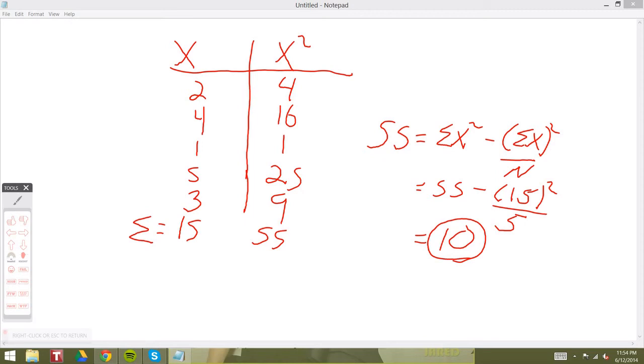It'd be much more tedious to go through the definitional formula and take each x value, find its deviation score, and then square those and sum all those up. Whereas in the computational formula, you would just have to take each x value, square them, and plug in the formula. And that is how to solve for the SS using the computational method.